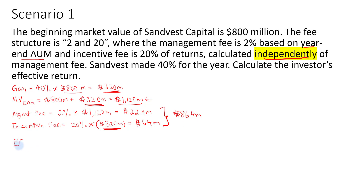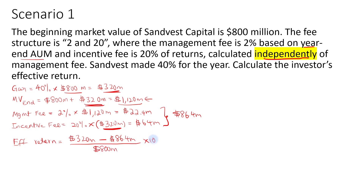So the effective return for the investor will be the return of $320 million minus the total fees of $86.4 million, and then we divide by the initial market value of $800 million and multiply by 100%. So we get 29.2%. From 40% for the year, the investor is only left with 29.2% after fees.